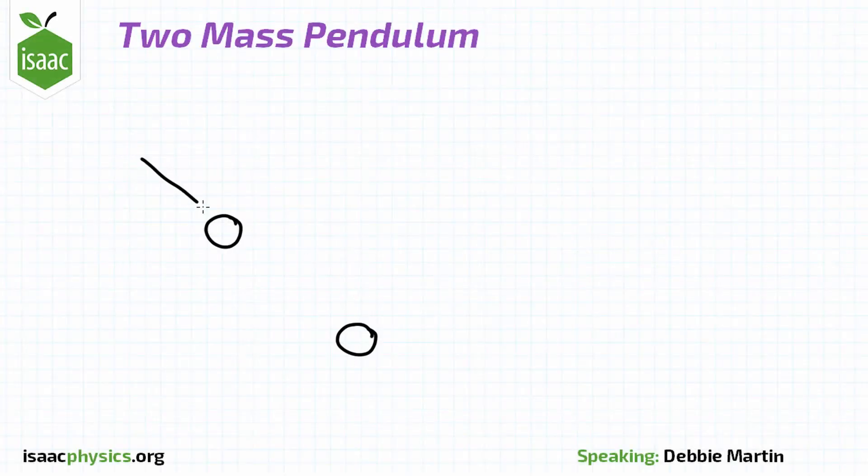In this question we have two point masses attached to a light rigid beam of length L which is pivoted at one end.